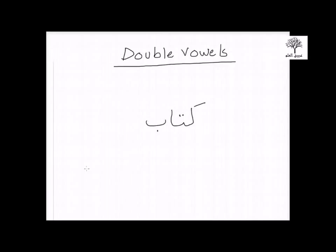So let's say we have the word Kitab, which means 'book.' You have a Kasra on the Kaf, a Fatha on the Ta. And the Ba here is what we're interested in. In the Arabic language, all nouns by default take double vowels. However, the vowels on the last letter will definitely change.